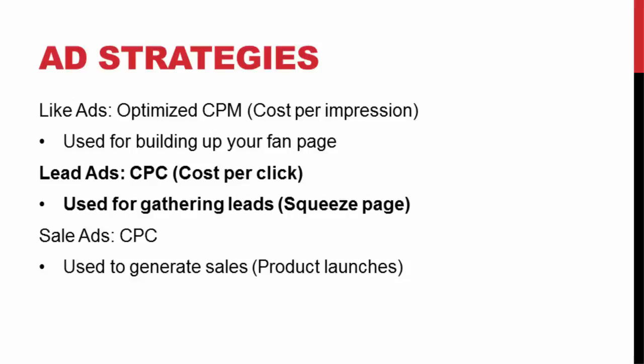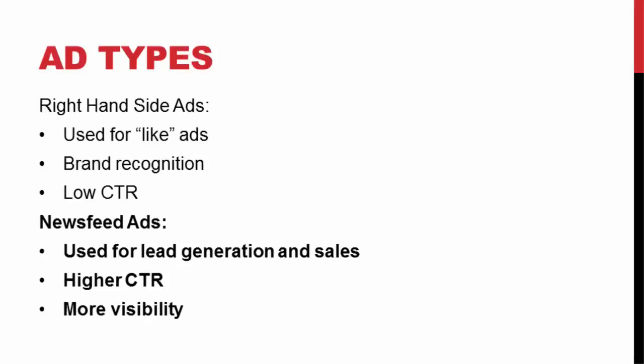Facebook offers cost per click or CPM which is cost per impression — cost per click means you pay every time someone clicks your ad, while CPM means you pay a flat amount per 1,000 impressions regardless of clicks. There are also two types of ad placement: right hand side ads and news feed ads. Right hand side ads are better for like-type ads when building your fan page. They're not too effective for building an email list or making sales — that's where the news feed ad comes in.